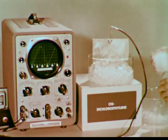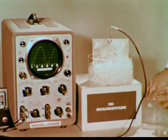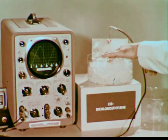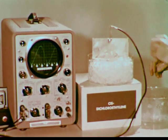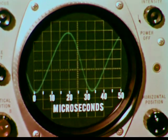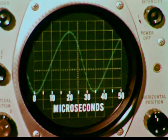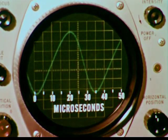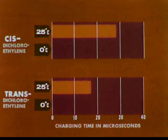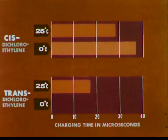We'll chill the polar substance, cis dichloroethylene, to zero degrees centigrade. Insulating lacquer on the outside of the cell prevents electrical conductance through the water in the ice bath. As the cis cools, the charging time does increase. Here are the previous charging times. After thorough cooling, the cis time becomes 37 microseconds, somewhat longer than at room temperature.